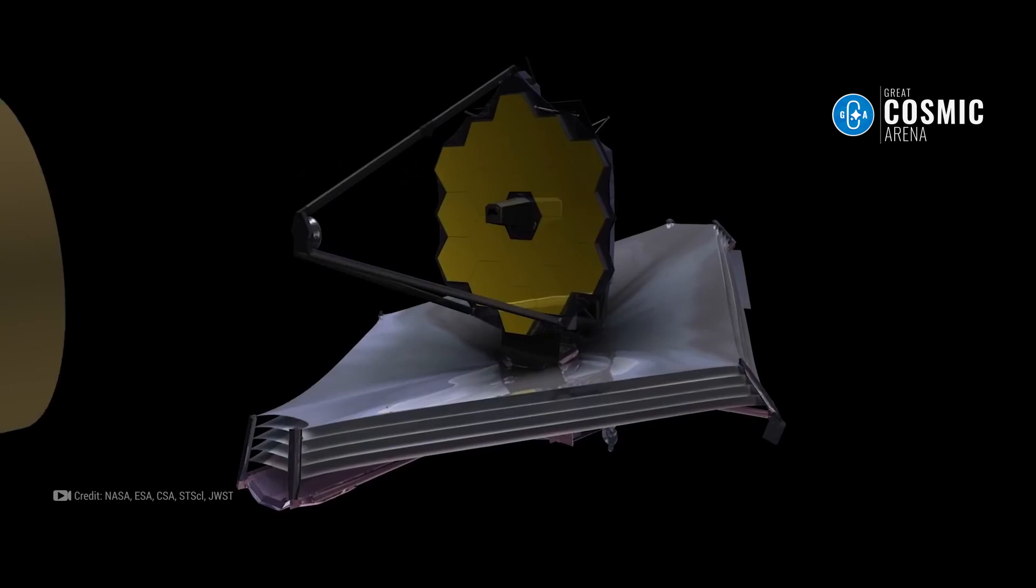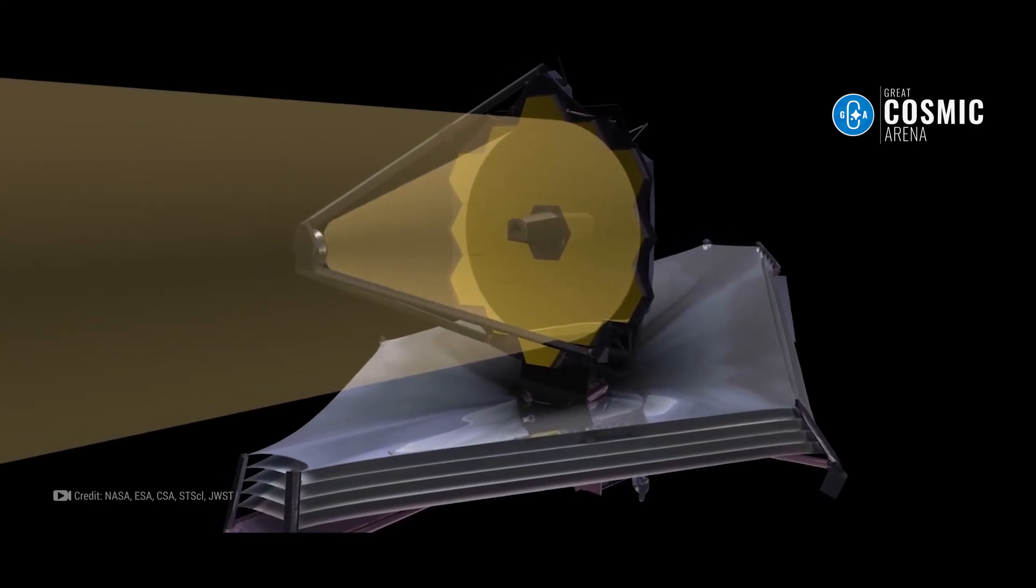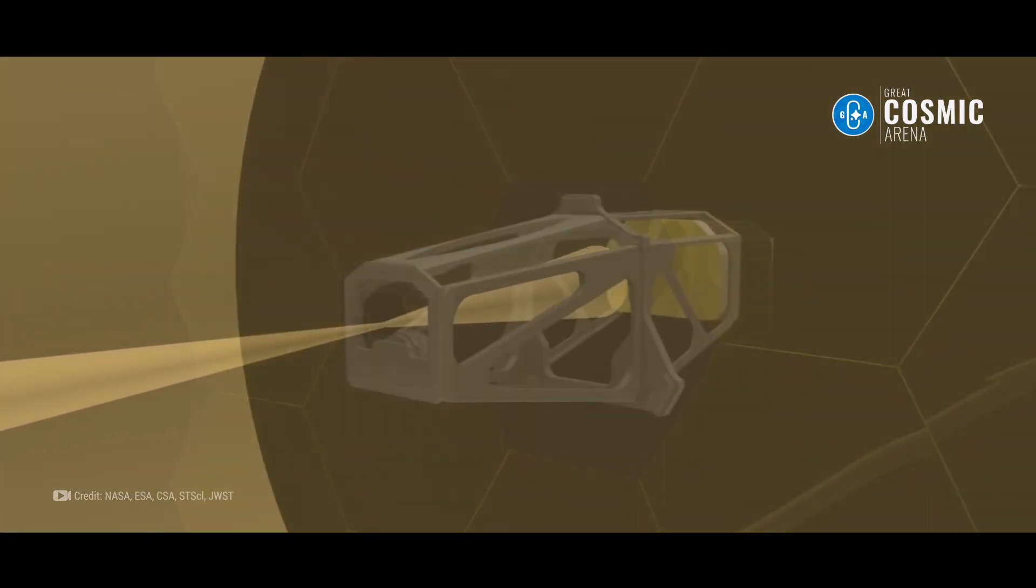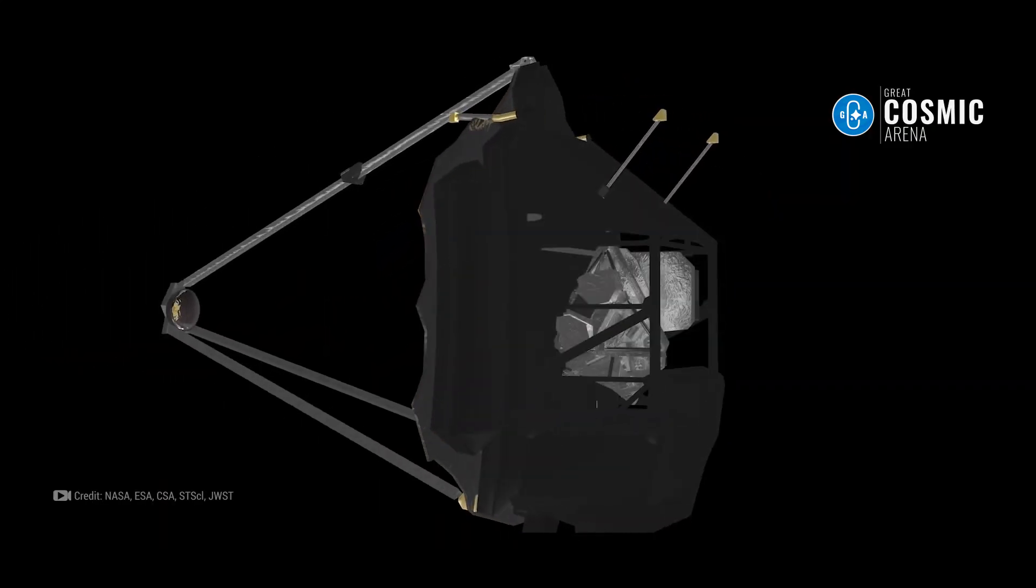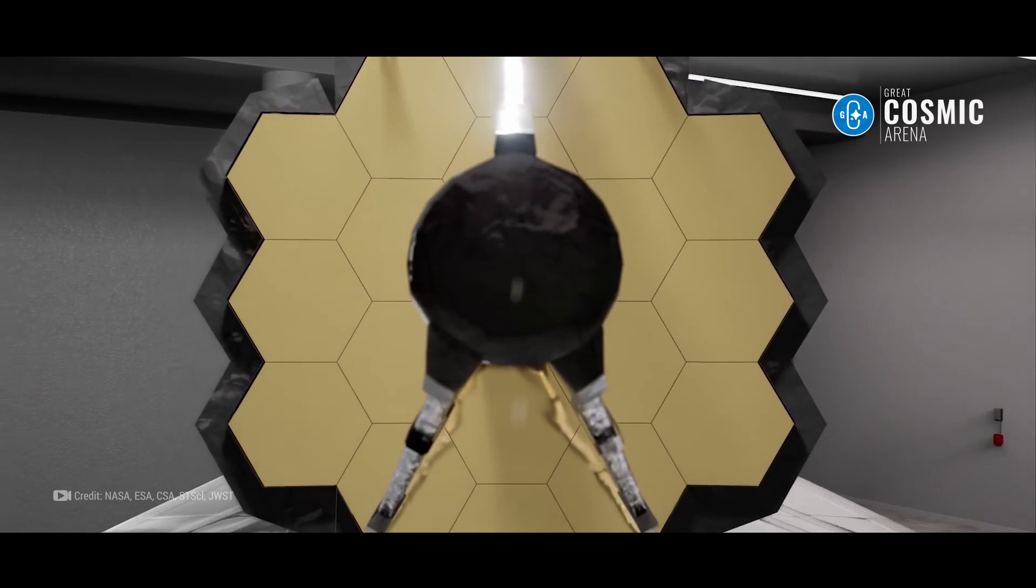Firstly, JWST is not a camera but a telescope. It uses a large 6.5 meter mirror, 2.7 times larger than Hubble's. This allows it to capture more light, revealing fainter and more distant objects.